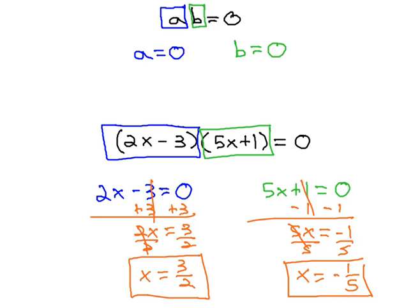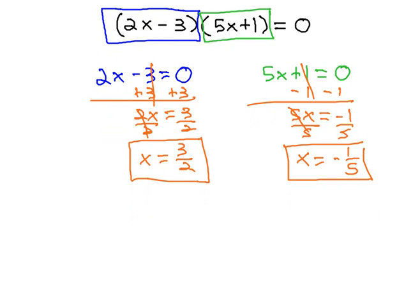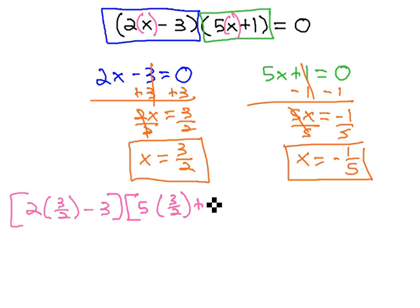We can check that these are, in fact, the solutions to our equations by plugging them in and replacing the x's with the numbers. Let's check the 3 halves first. The first problem says 2x, or 2 times 3 halves, minus 3, times 5x, or 5 times 3 halves, plus 1. And then, hopefully, will equal 0.